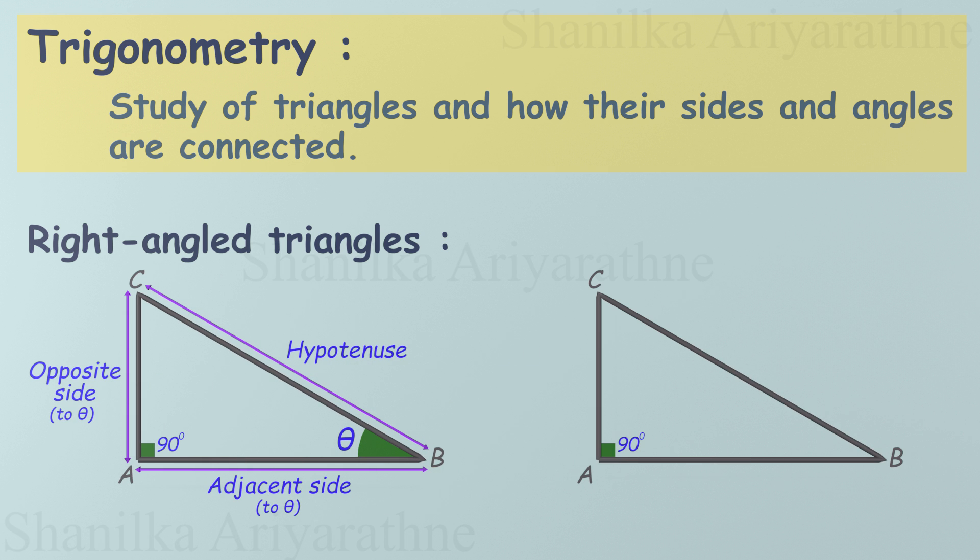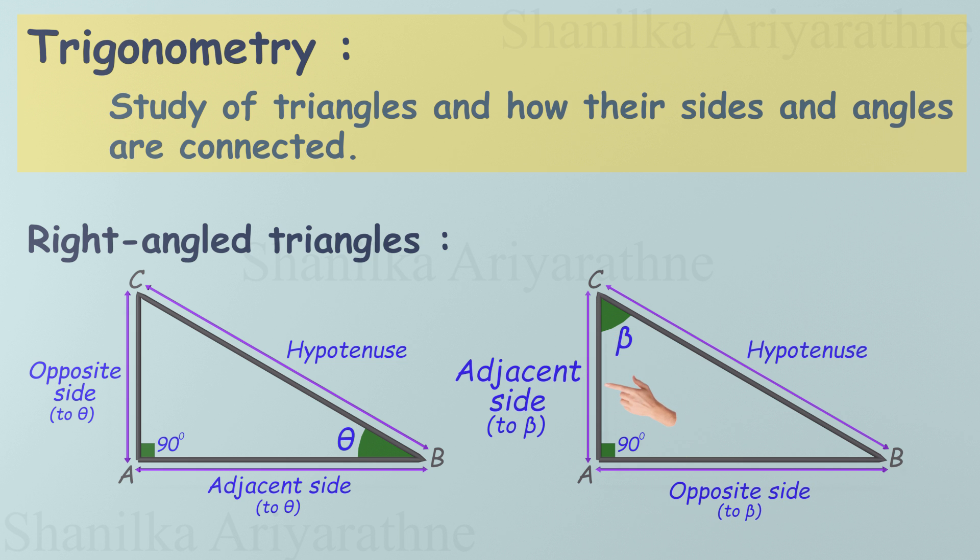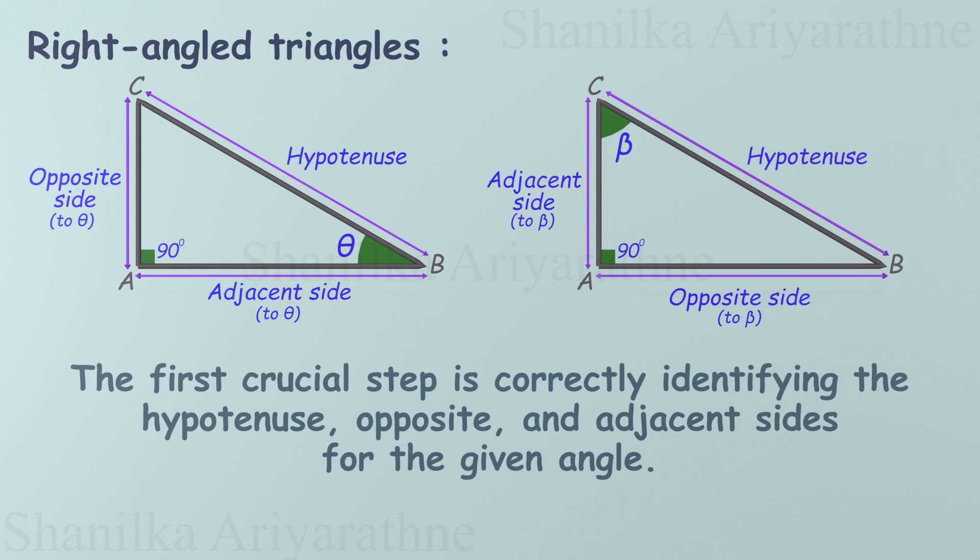But what if we switch things up and pick the other angle, beta? The hypotenuse stays put. Like we said, VIP status. The opposite side for beta is now where the adjacent side was for theta, and the adjacent side for beta swaps places with the opposite side. See how the names depend on which angle you're checking out? Step one in trigonometry is correctly spotting the hypotenuse, opposite, and adjacent sides based on the angle you're working with. Get this right, and you're already halfway to mastering trig.